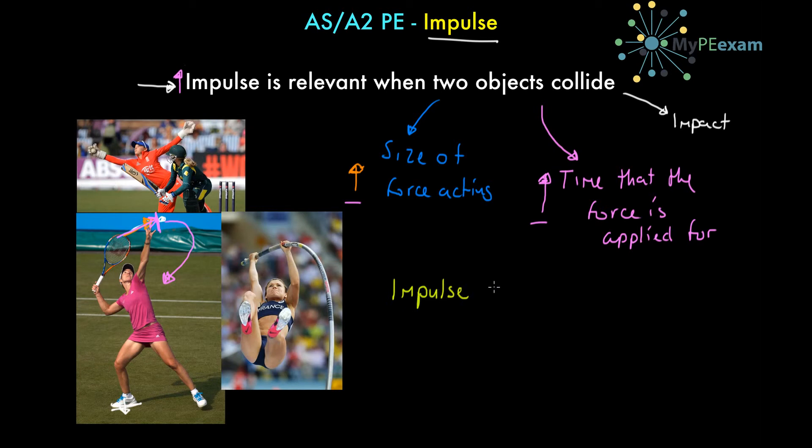We can say that if impulse is a product of force and time, then impulse is force times time. An even better way to show that is to say that impulse equals F times t, so impulse equals Ft.